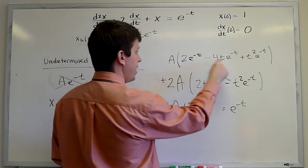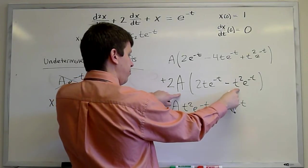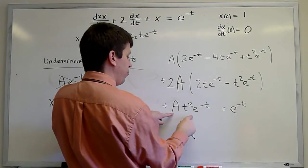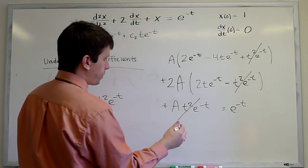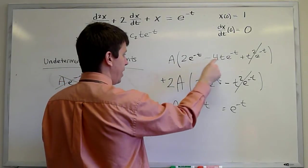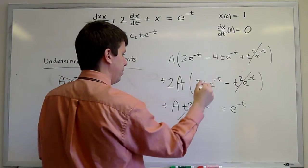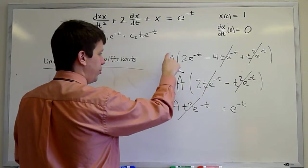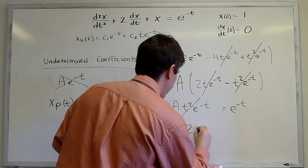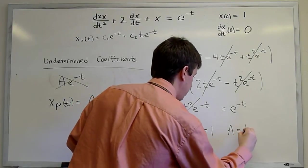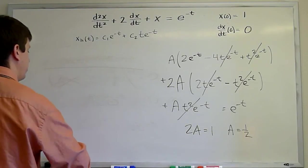So things cancel. We've got a t squared e to the minus t minus 2a t squared e to the minus t plus a t squared e to the minus t. So those all cancel. Then we have a minus 4a t e to the minus t and a plus 4a t e to the minus t. So those cancel. And all we're left with is 2a e to the minus t must equal e to the minus t. So 2a equals 1, a equals a half. And so we've found our particular solution.